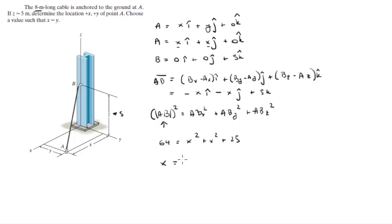But we pick the positive value because, as we can see from the diagram, it's going towards positive X and positive Y, and they're the same.